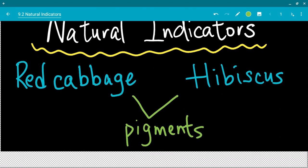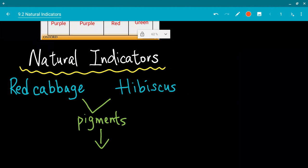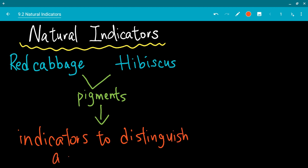And these pigments allow us, what do they allow us to do? They allow us to act as indicators. They allow us to distinguish acid and alkali. So the important, the main point for today's video I want to talk about is the natural indicators containing pigments, which help us to indicate and distinguish between acids and alkalis because they would show up with different colors.